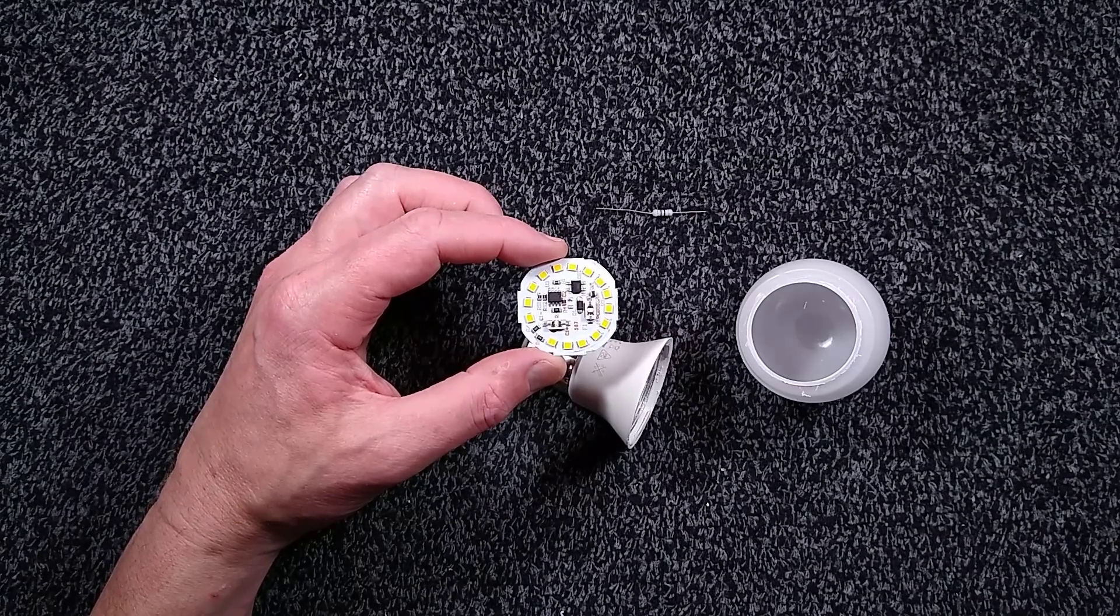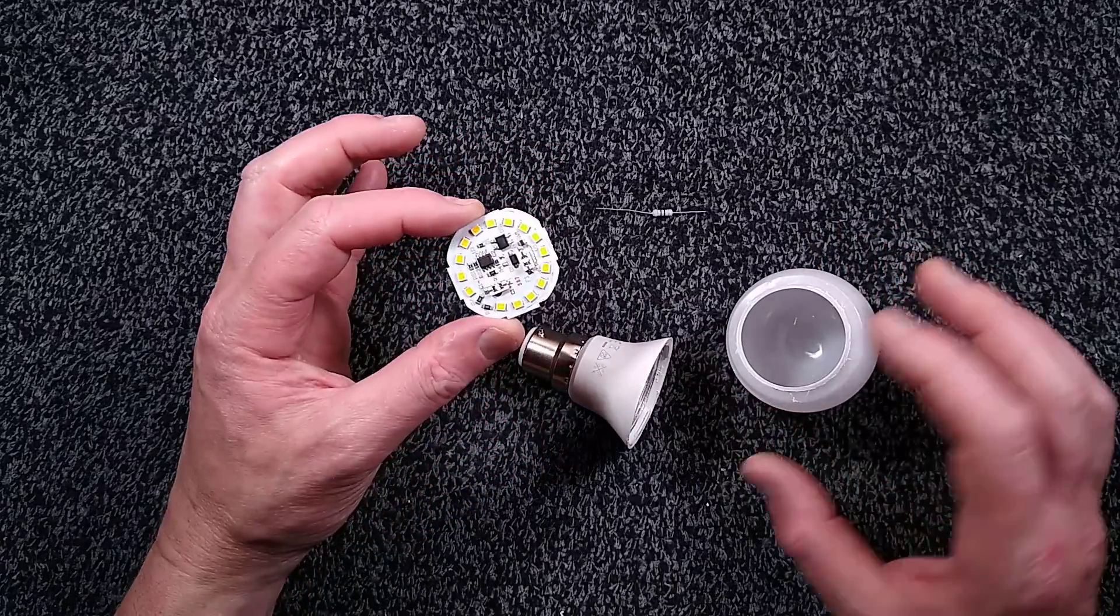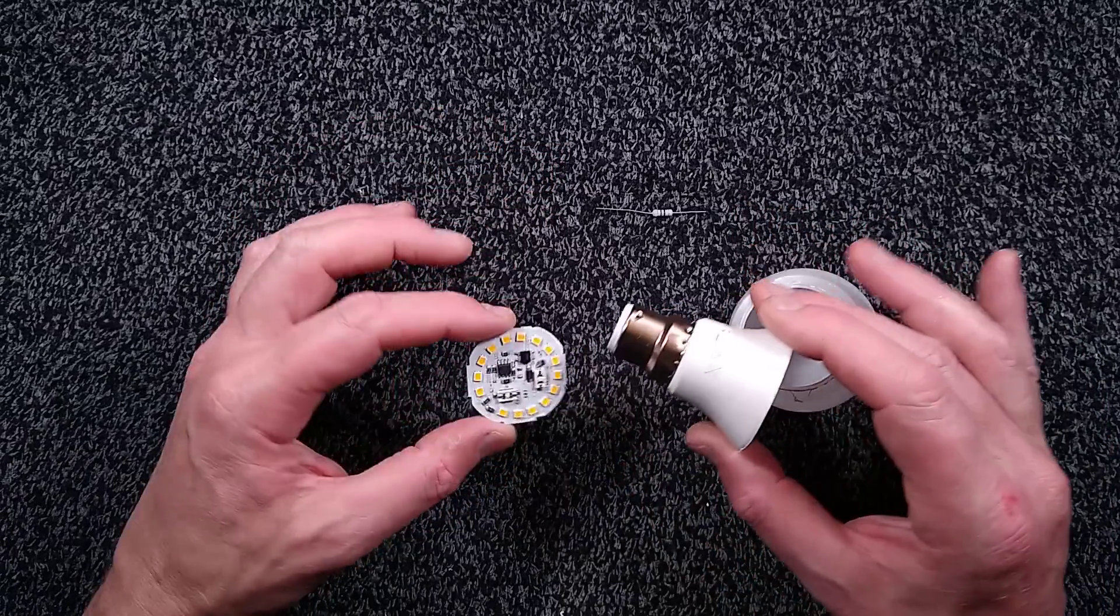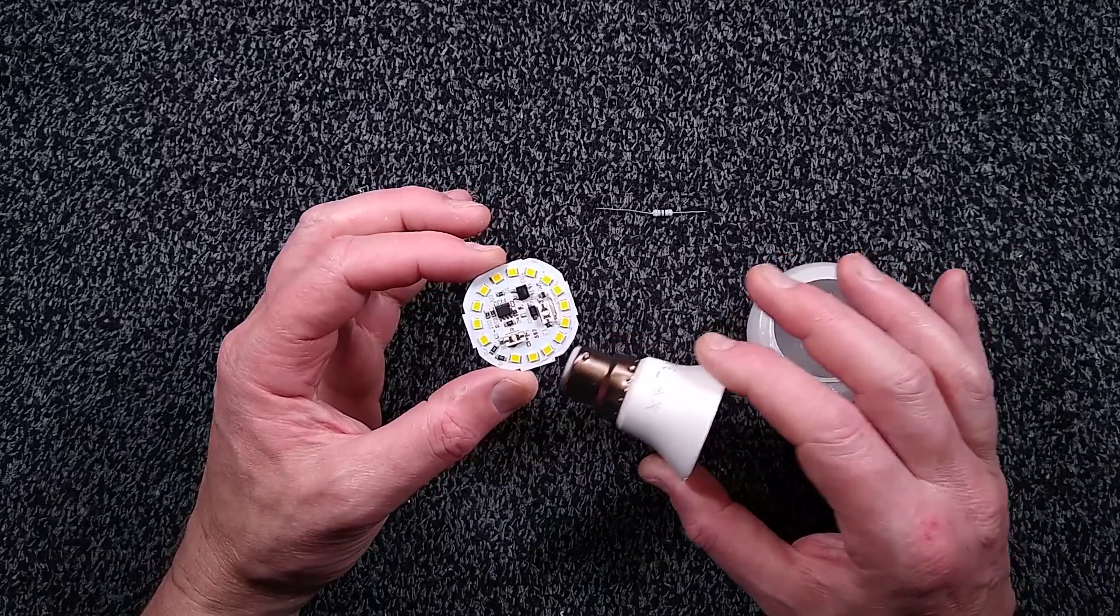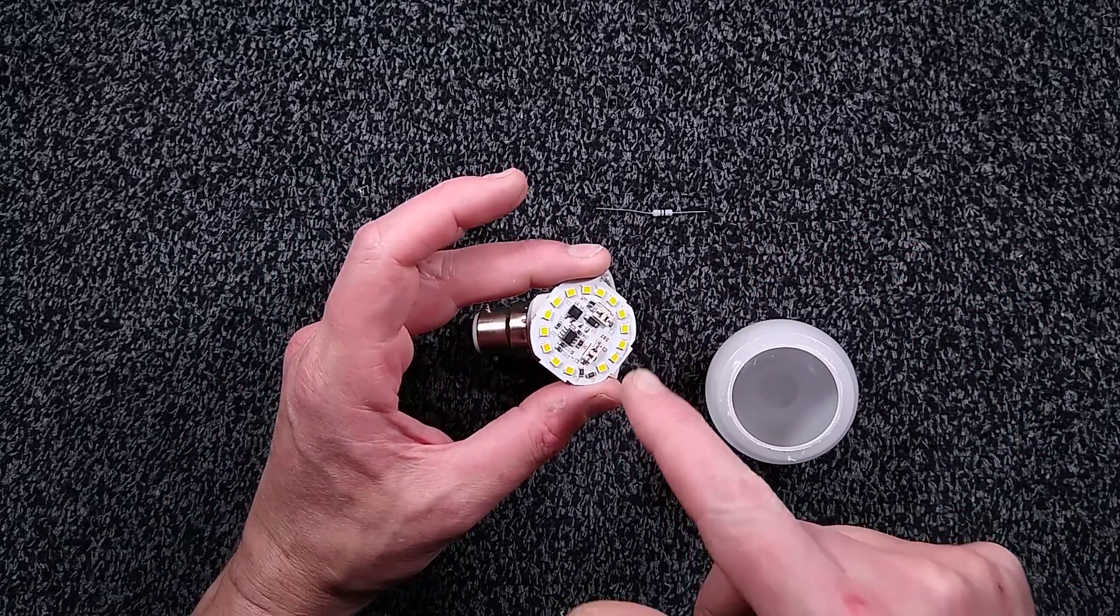In my never-ending quest to hack all the lamps, the latest victim of my hacking is the Tesco LED lamp. This one is rated 7.3 watts and initially it looked as though it was fairly standard construction.